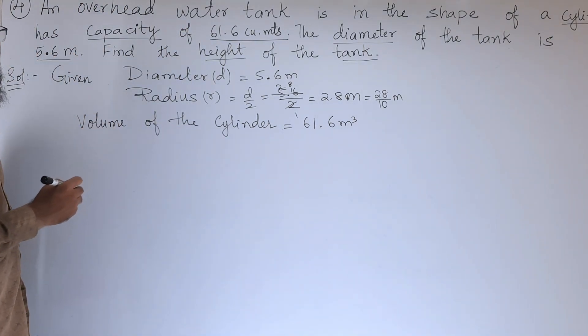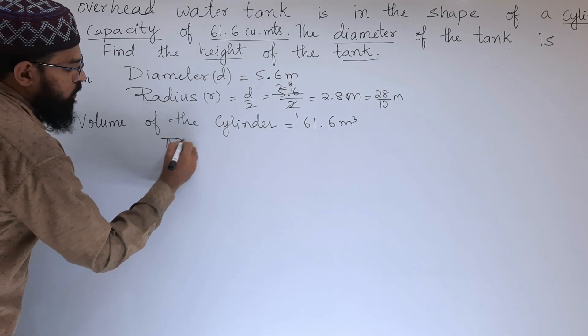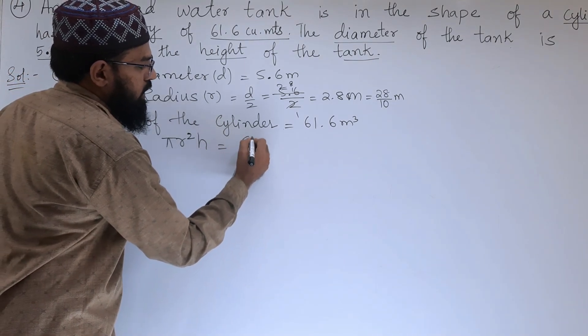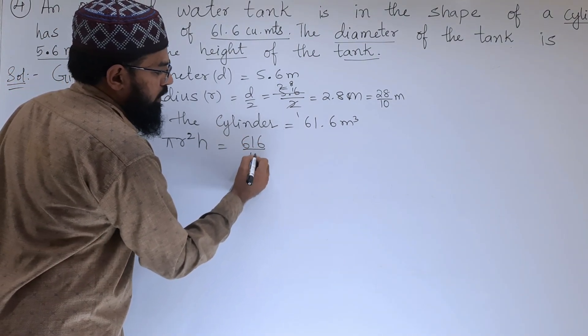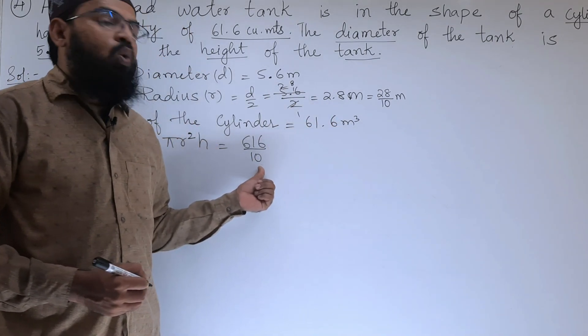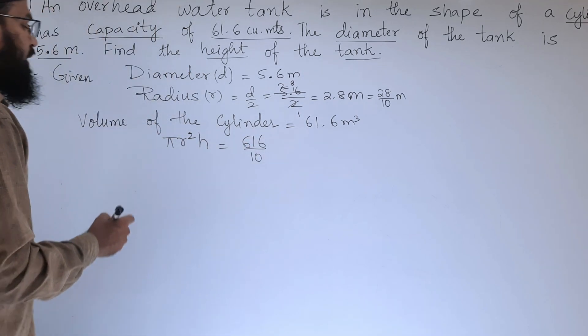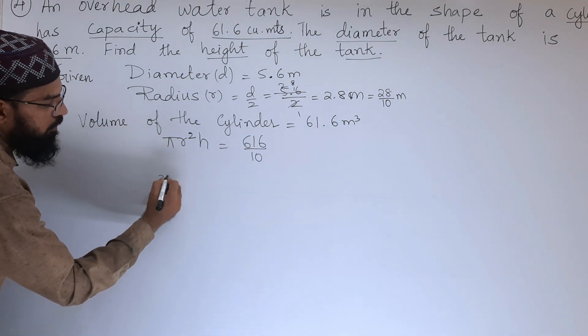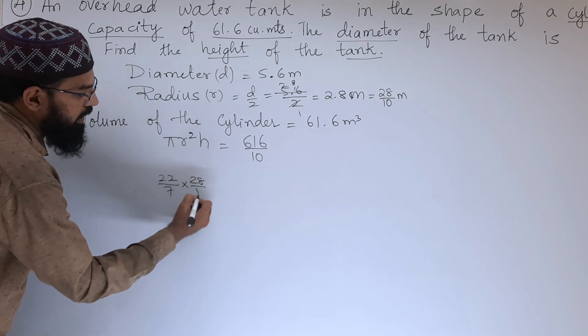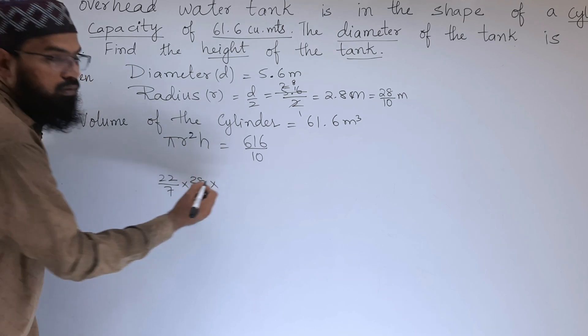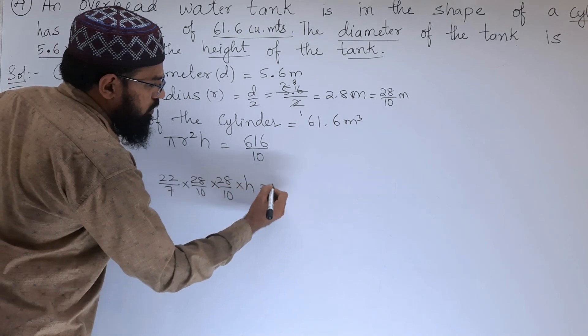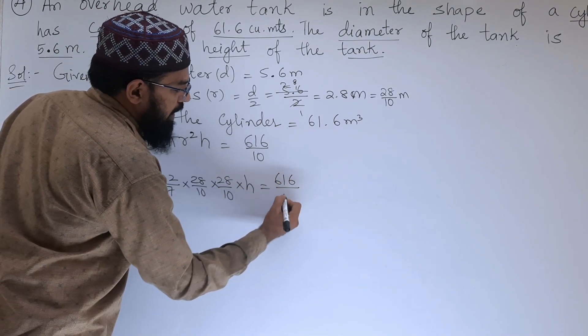For the volume, formula is πr²h equals 616 by 10. As after decimal only one digit is there, for one digit we will write 10. Next, we will substitute the values: π is 22 by 7, r is 28 by 10 r square, that means we need to write it twice, 28 by 10, into h equals 616 by 10.